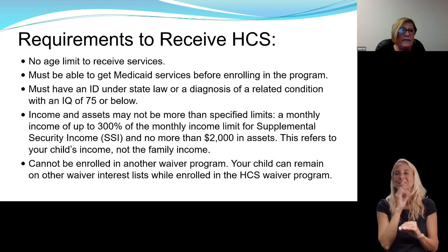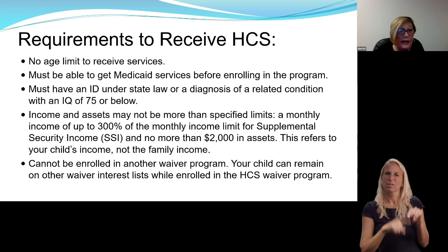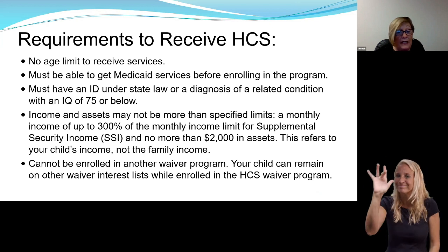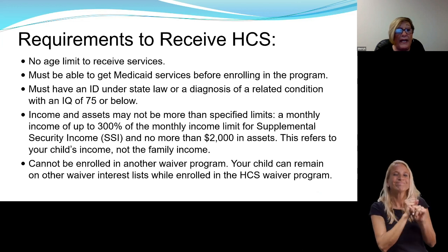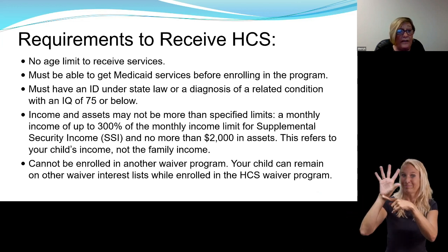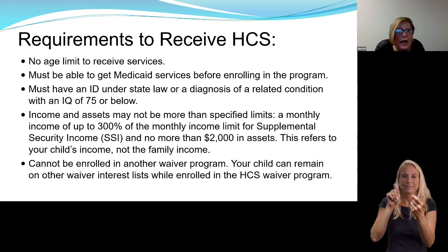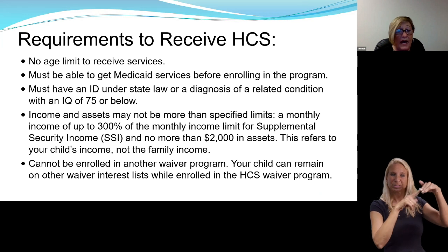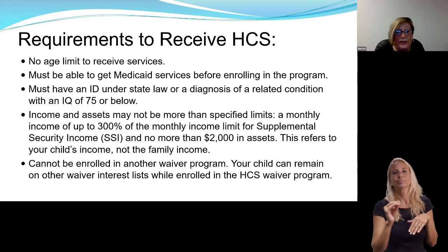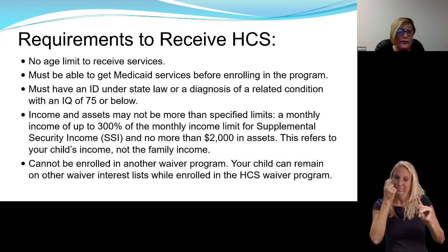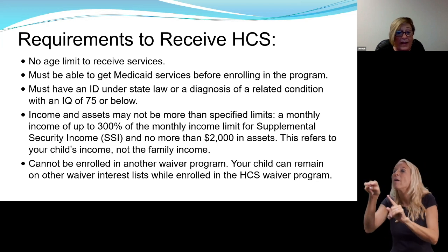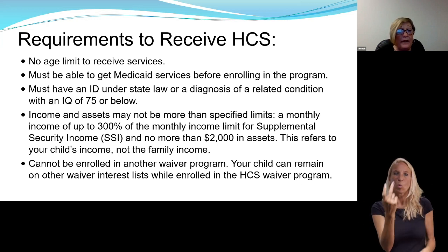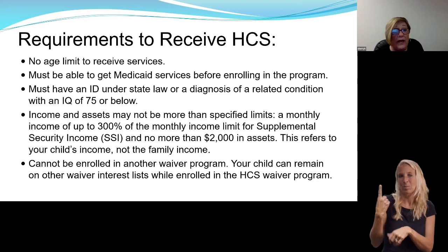The requirements to receive HCS: there is no age limit to receive services. You must be able to get Medicaid services before enrolling in the program, must have an intellectual disability under state law or a diagnosis of a related condition with an IQ of 75 or below. Income and assets may not be more than 300% of the max of SSI, and a person cannot have more than $2,000 in resources. This refers to the person's income only, not the family as a whole. You cannot be enrolled in another waiver and receive this waiver, but you can be on the interest list for other waivers — you can only receive one waiver at a time.